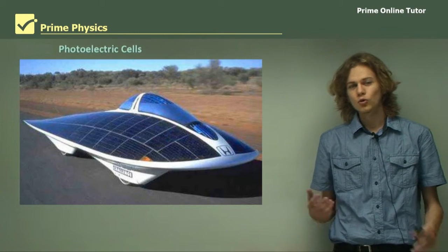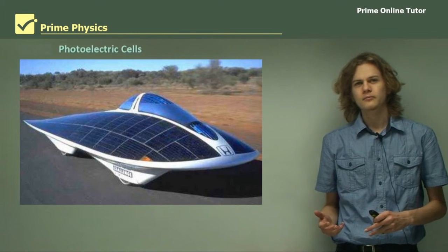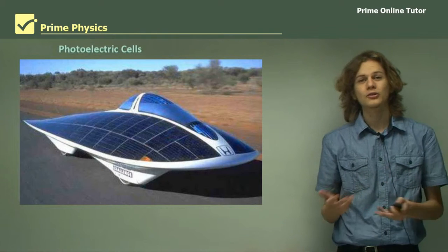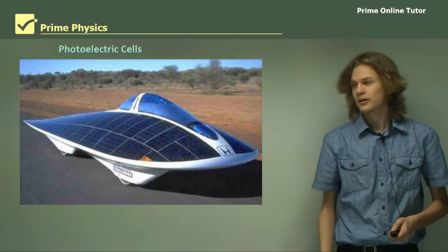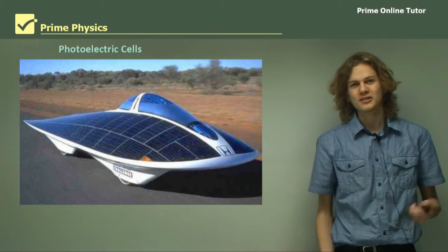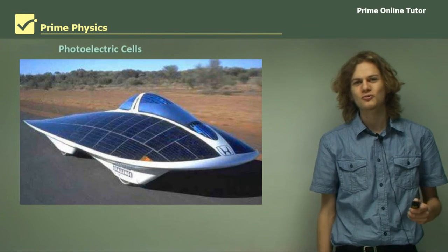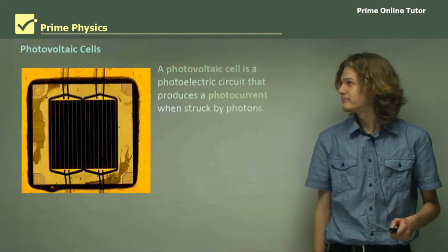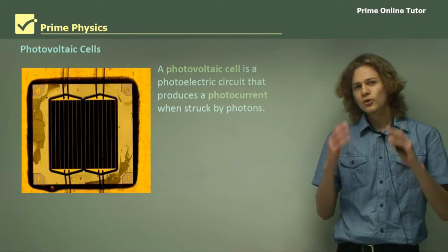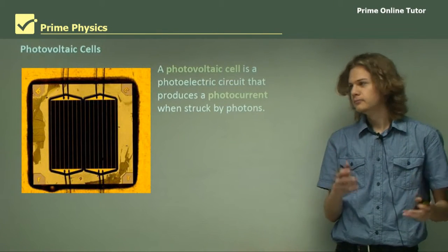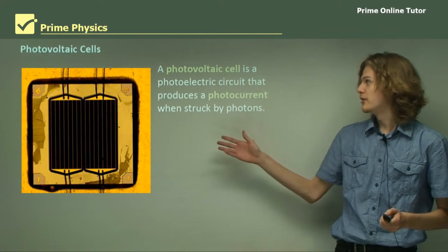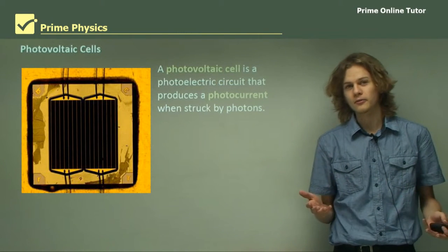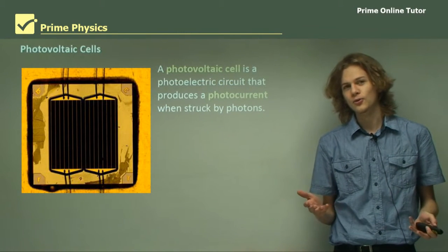Here we'll be learning about the uses of turning light energy into electrical energy. Here we can see a solar-powered car, which is of course one use of photoelectric cells. So a photovoltaic cell — we can see one here — is a photoelectric circuit that produces a photocurrent when struck by photons.